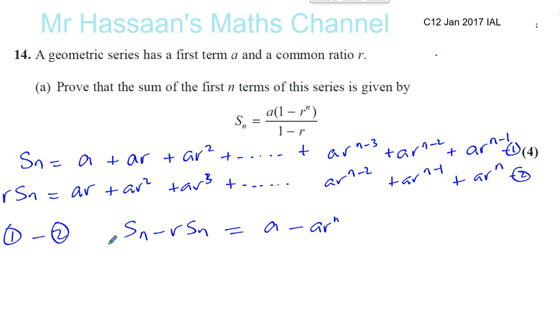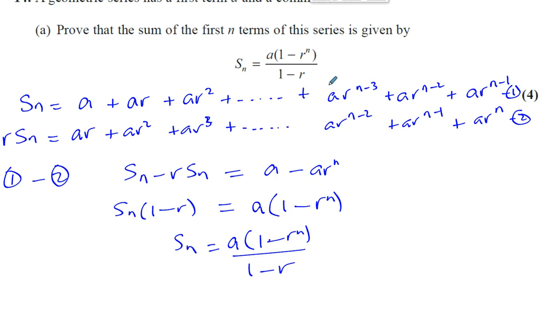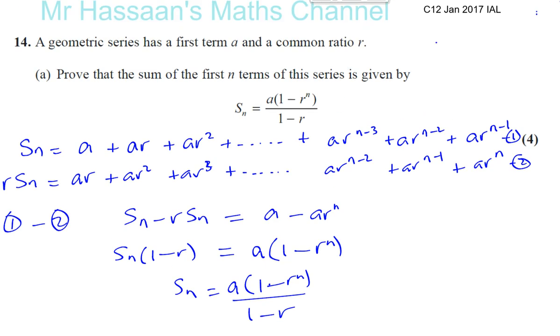Now what we can do is take out the common factor from this side, that's Sn, so Sn times 1 minus R. And the common factor from this side, which is A, so you've got A times 1 minus R to the power of n. And then finally, we just divide both sides by 1 minus R. So we have Sn equals A times 1 minus R to the power of n over 1 minus R. And that's part A done. I'll do part B on a separate video.